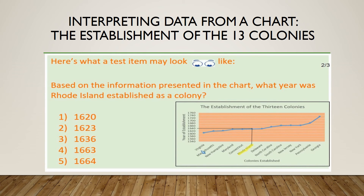So now we can come over to our options, and we see that the closest year to 1640 would actually be option number three. We can conclude, based on the chart, that the answer to our question — what year was Rhode Island established as a colony — is 1636, which is the closest year to 1640 according to the chart.